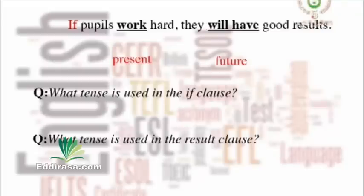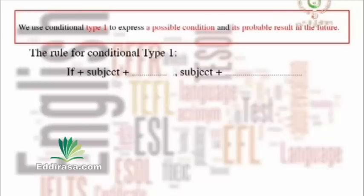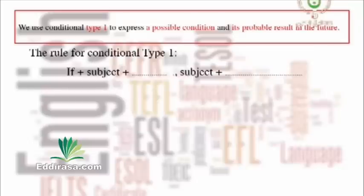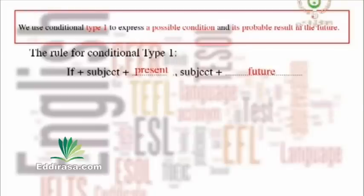Let's fill in the gaps to get the rule of the first type of if clauses: if plus subject plus present tense, comma, then in the result clause subject plus future. We use this type — conditional type one — to express a possible condition and its results in the future.